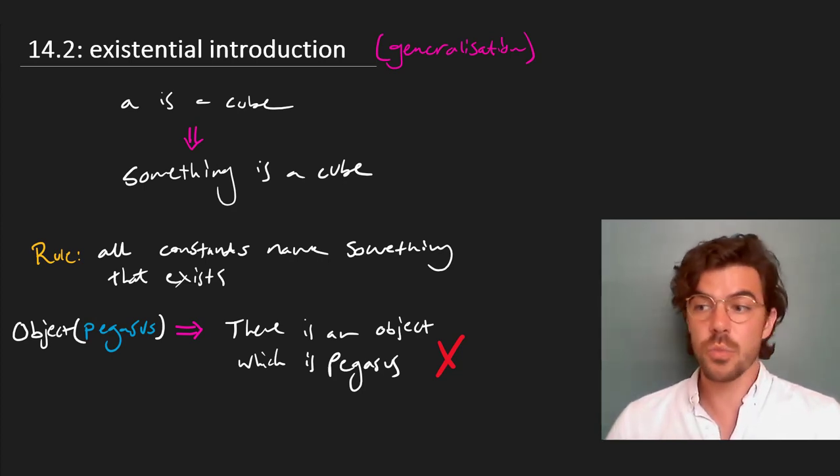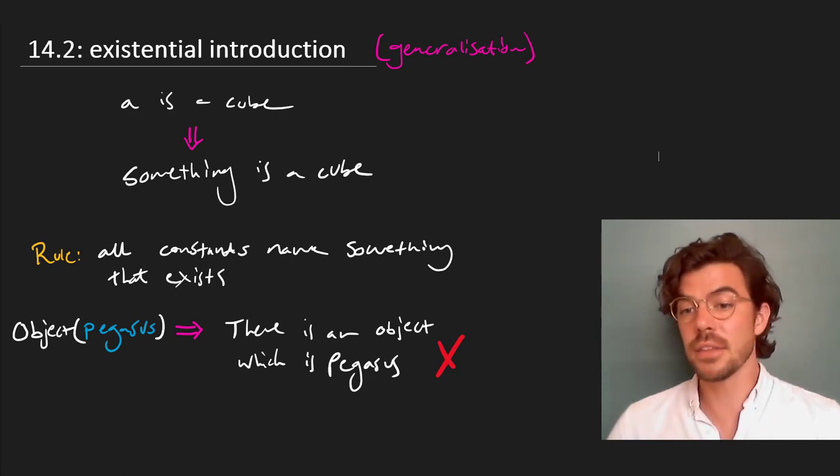For our purposes, though, we treat existentials as operators, and we do not have constants that name anything that doesn't exist.